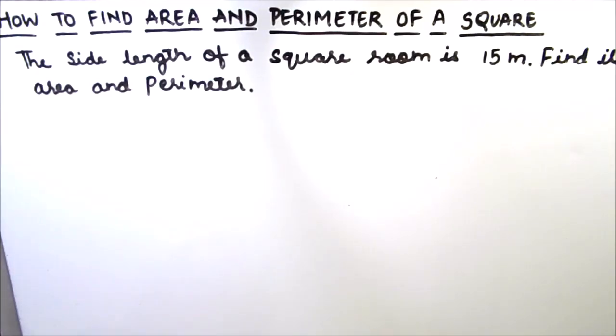Hello everyone, in this video we are going to learn how to find area and perimeter of a square. Let's read our question. Side length of a square room is 15 meter. Find its area and perimeter.